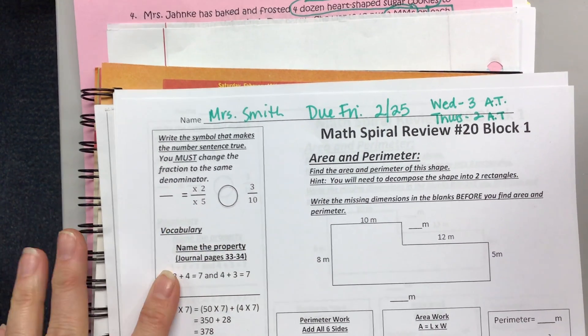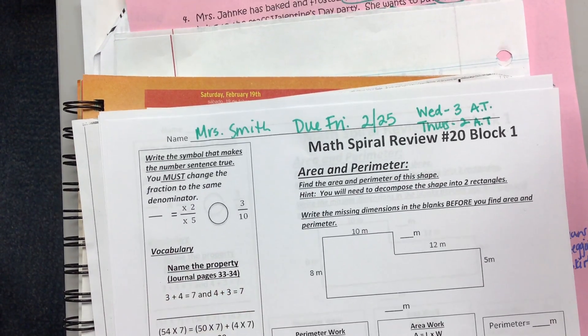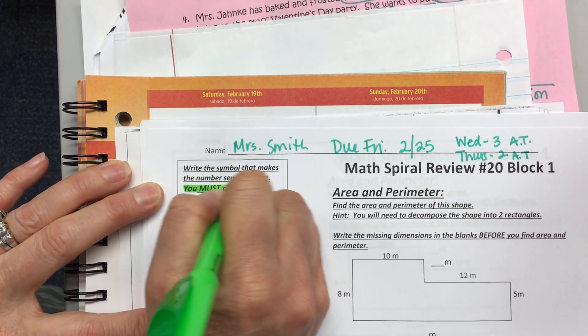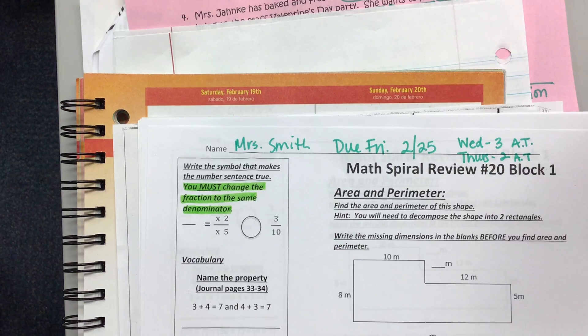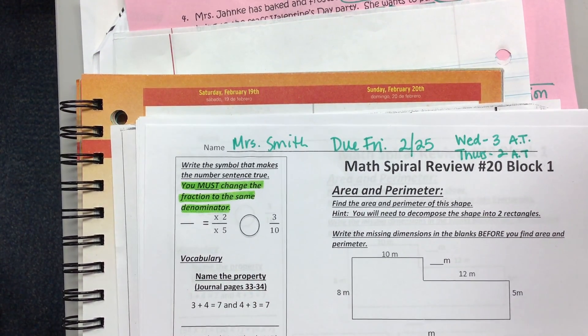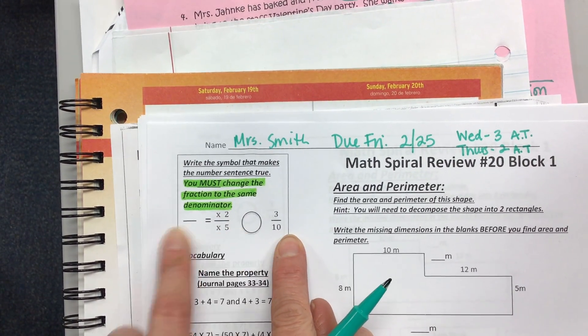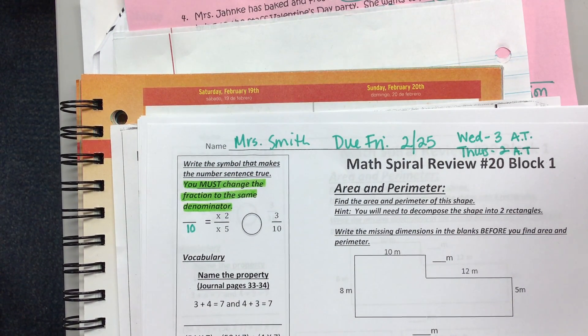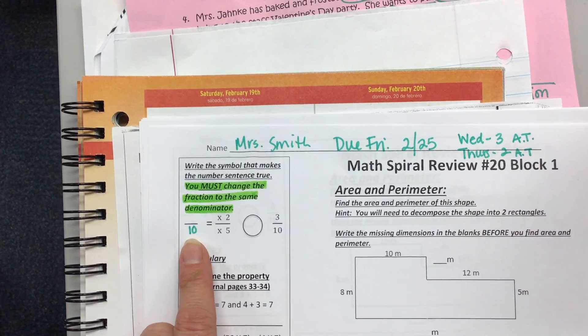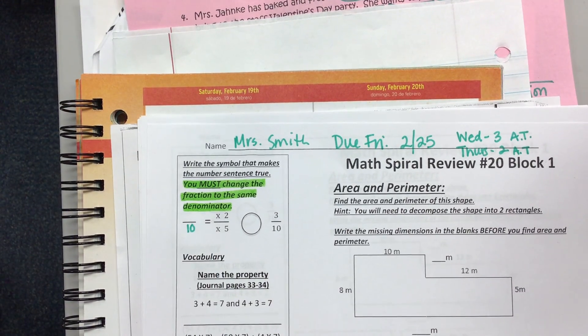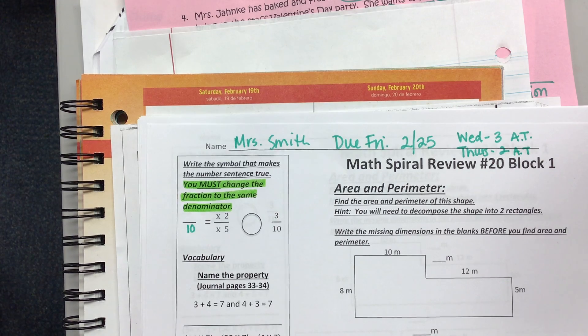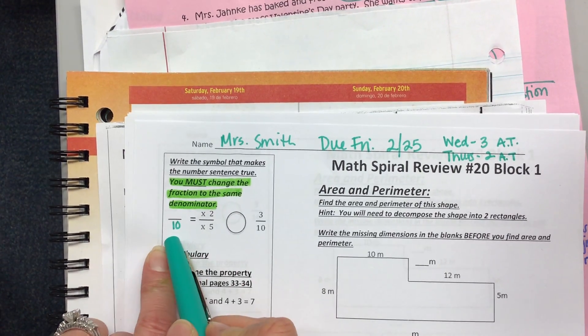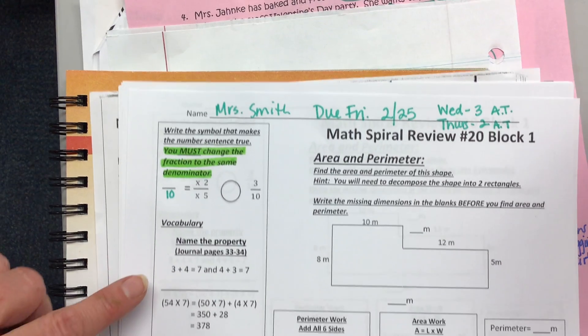So on this part, it says write the symbol that makes the number sentence true. You must change the fraction to the same denominator. So we're comparing our fractions. That's something we're going to be practicing in class today. But if this one has a denominator of 10, then this one has to have a denominator of 10 in order to compare. So how do we make common denominators? To find equivalent fractions, multiply or divide the numerator and denominator by the same number. So 5 times something is 10, and then you need to multiply that numerator by the same number.